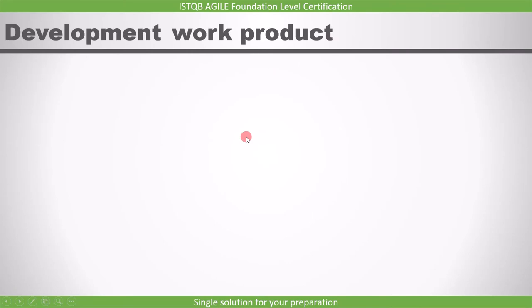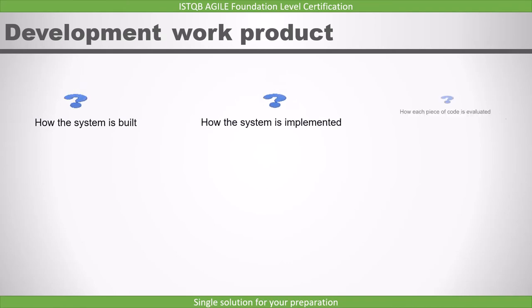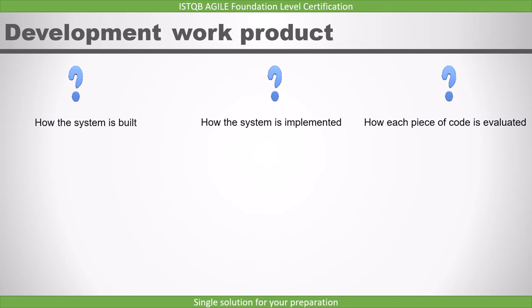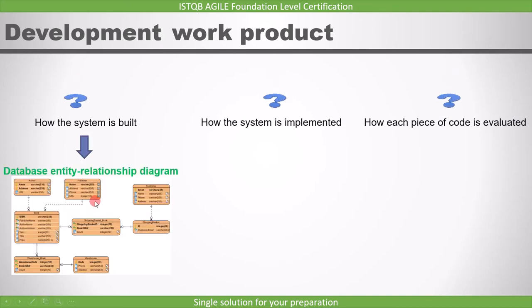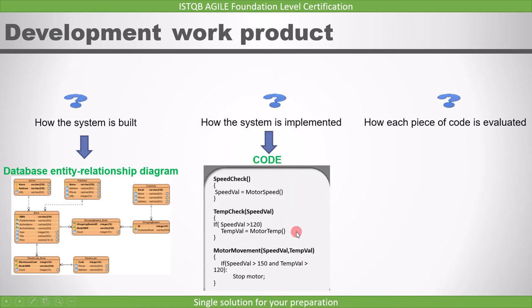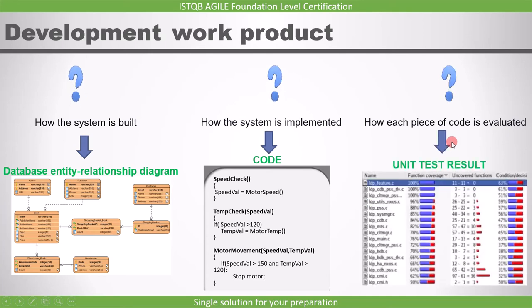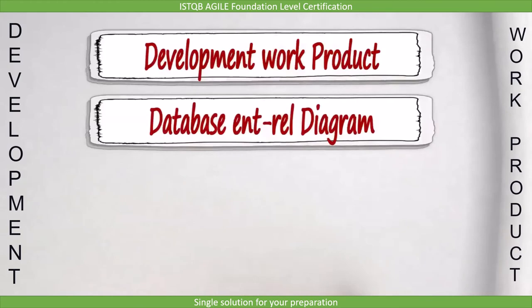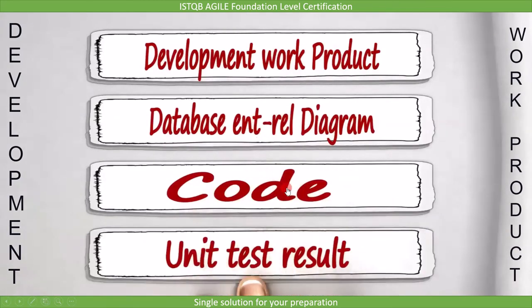Next is the development work product, and it describes how the system is built, how the system is implemented, and how each piece of code is evaluated. The structure of the system is represented by a database entity relationship diagram. How the system is actually implemented is known by the code, and how each piece of code is evaluated is shown by the automated unit test result. What you need to remember is: database entity relationship diagram, code, and unit test results are the work products of a development task.